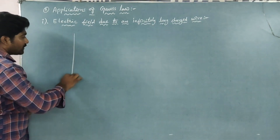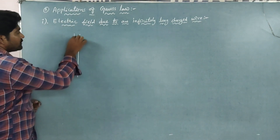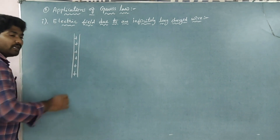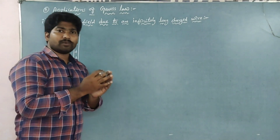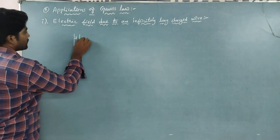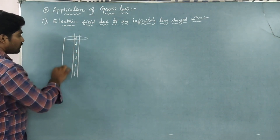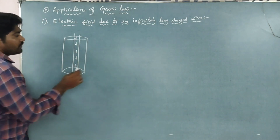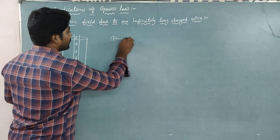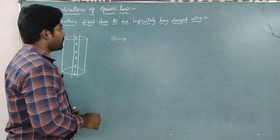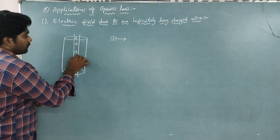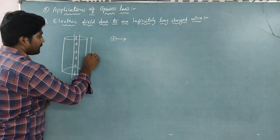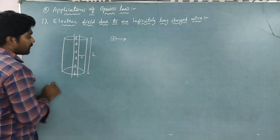Now, we will consider a long charged wire. This is a long charged wire. In the long charged wire, there is a positive charge. Here we will consider a cylindrical surface. The conductor is the charged wire. This is length capital L, and this is radius, smaller r.